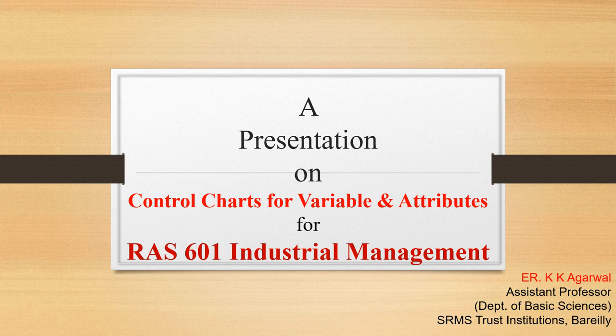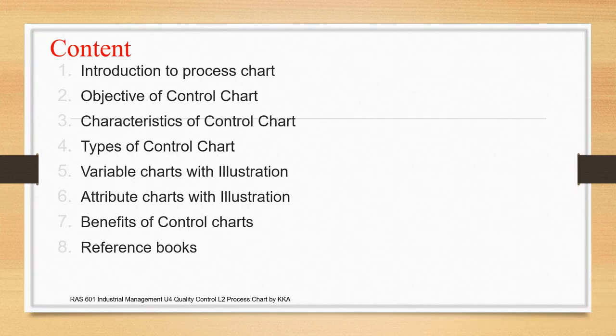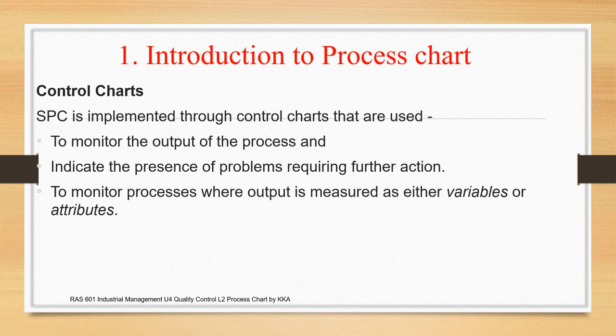Welcome to all. In the second presentation for Unit 4, the topic is Control Charts for Variable and Attributes. The subject is Industry Management for the subject board RA601, a common subject for VTEC 6 improvements of oil branches. The content of the presentation includes Process Chart, its definition, Objective, Characteristics, Types of Control Chart, Variable Charts and Attribute Chart with illustrations, followed by Benefits of Control Chart.